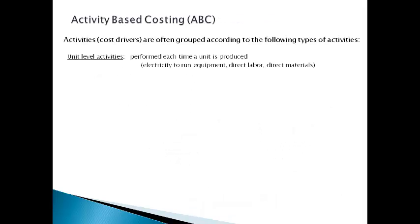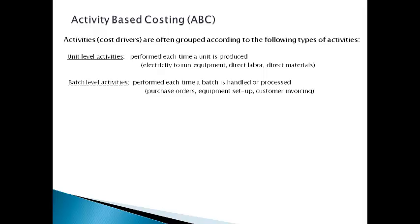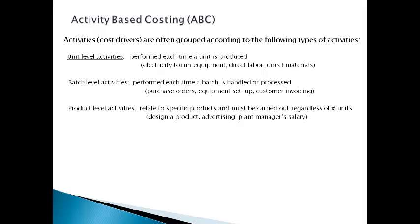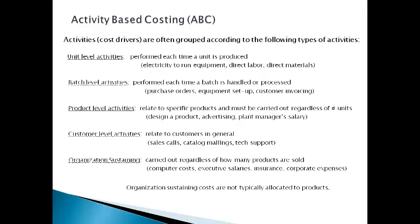Companies often group cost drivers according to their function within the company. Unit-level activities occur each time a unit is produced. Product costs are unit-level activities. Batch-level activities occur to support a group of products or customers. Product-level activities are incurred to support products regardless of how many are produced or sold. Customer-level activities are directly related to customer support or customer acquisition. Organization-sustaining activities happen in support of the entire company and will continue at the same cost regardless of the number of product lines. Organization-sustaining activities are generally not allocated to product lines or products.